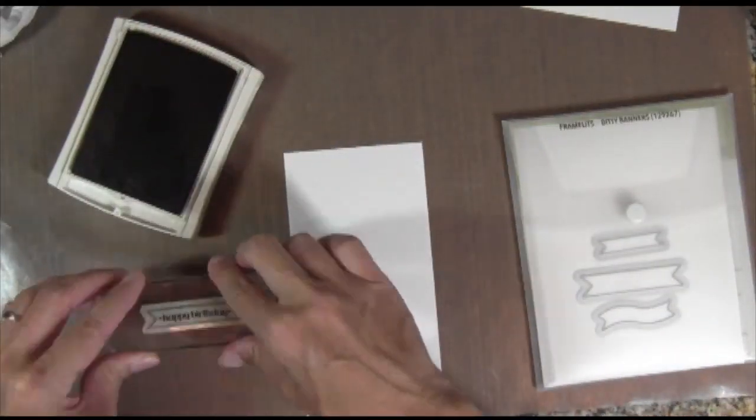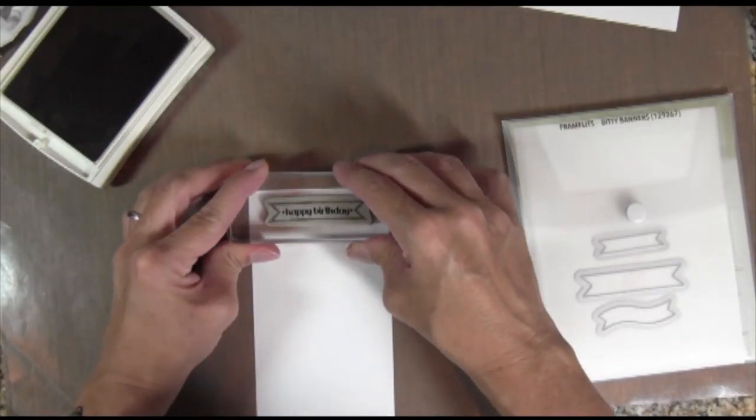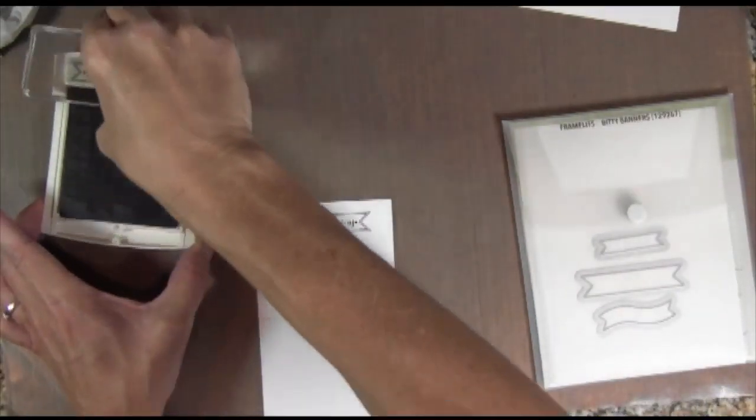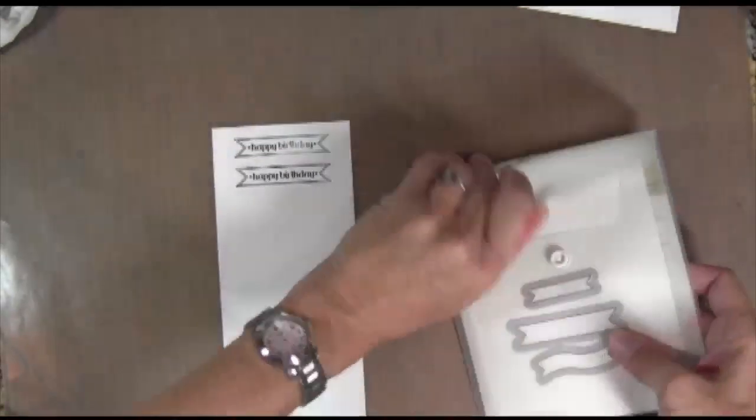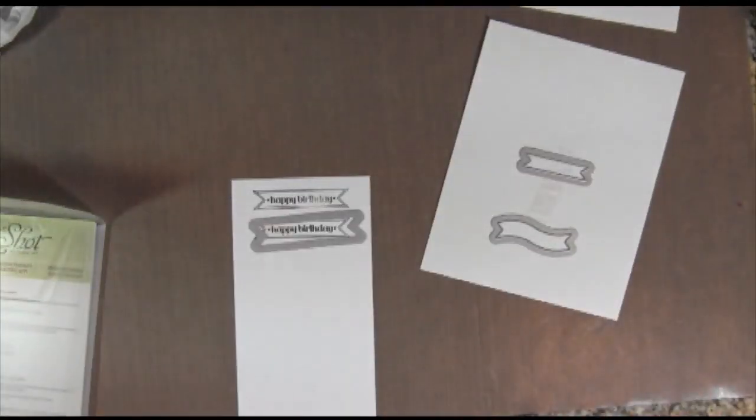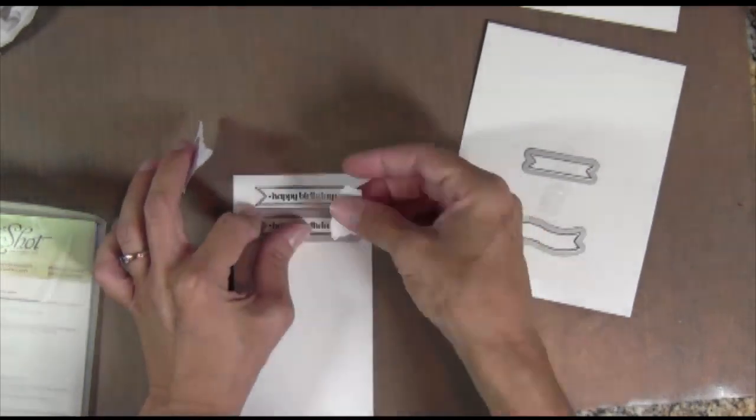This new set I love. It's the little bitty banners and the framelits that match and I'm using some Stampin' Up! black ink and I didn't like the way that stamped so I stamped it again. And then all the stamps in that set match up with one of these dies. So I'm going to hold it in place with some Eclipse masking tape and run it through my Big Shot.